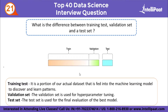What is the difference between training set, validation set, and test set? The training set is a portion of the actual dataset fed into the machine learning model to discover and learn patterns — typically 60-70% of the data. The validation set is used for hyperparameter tuning. The test set is used for the final evaluation of the best model.